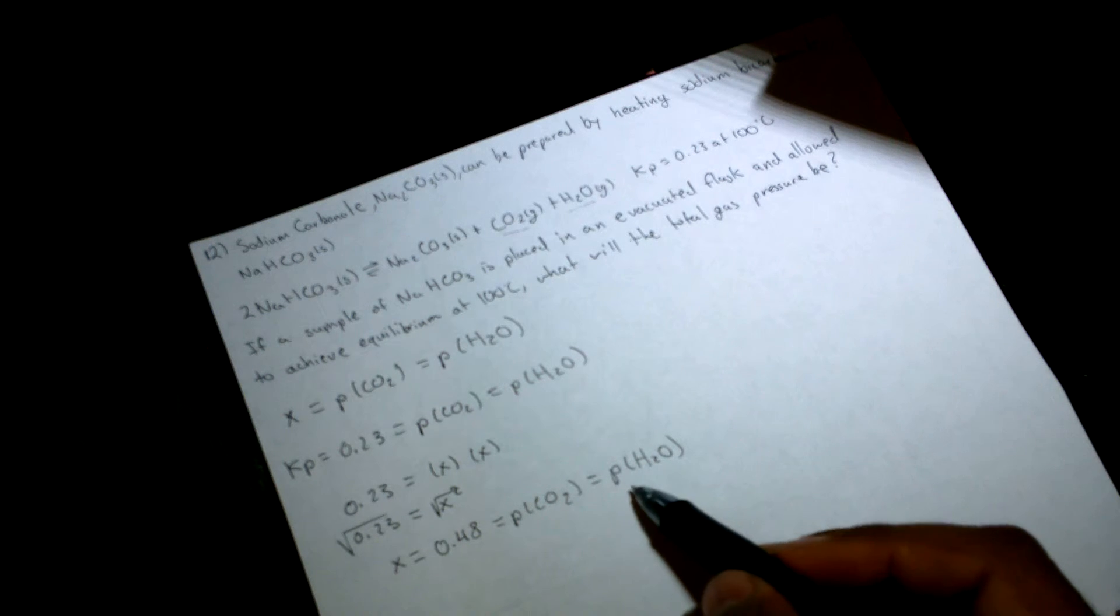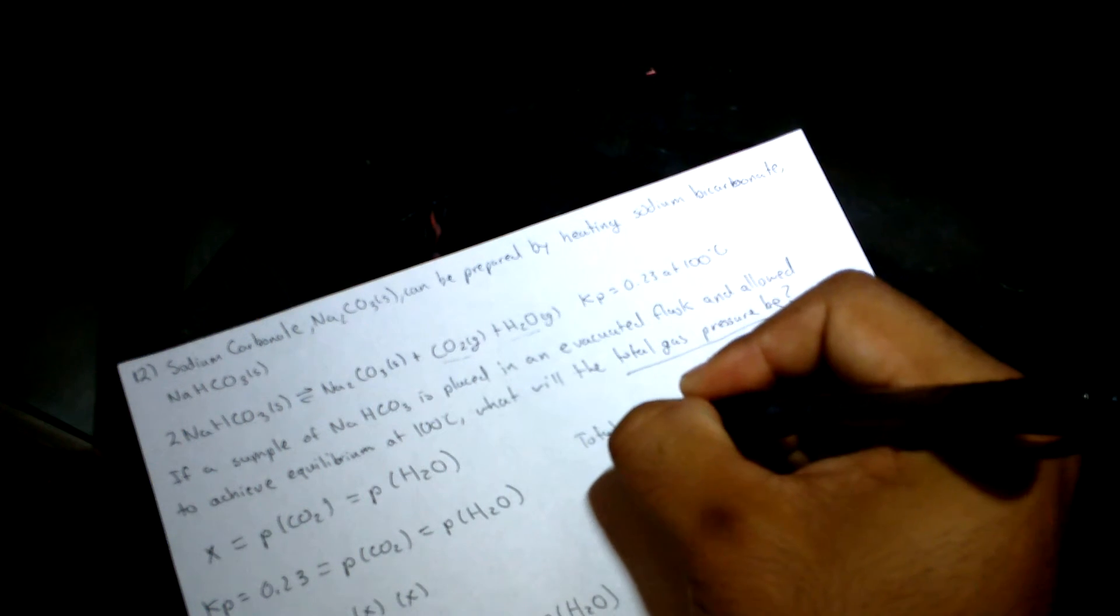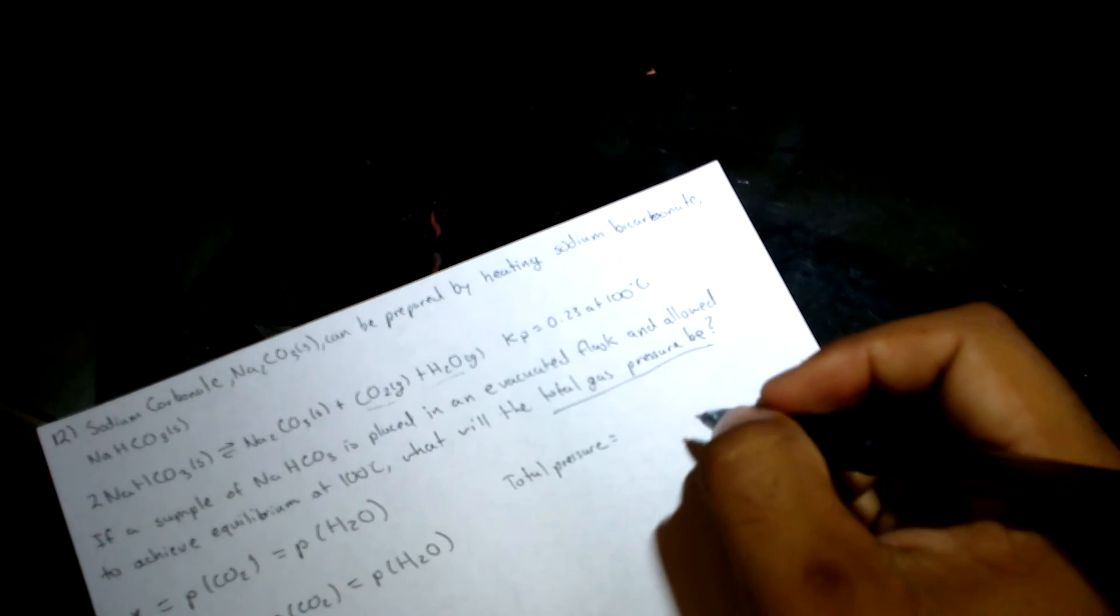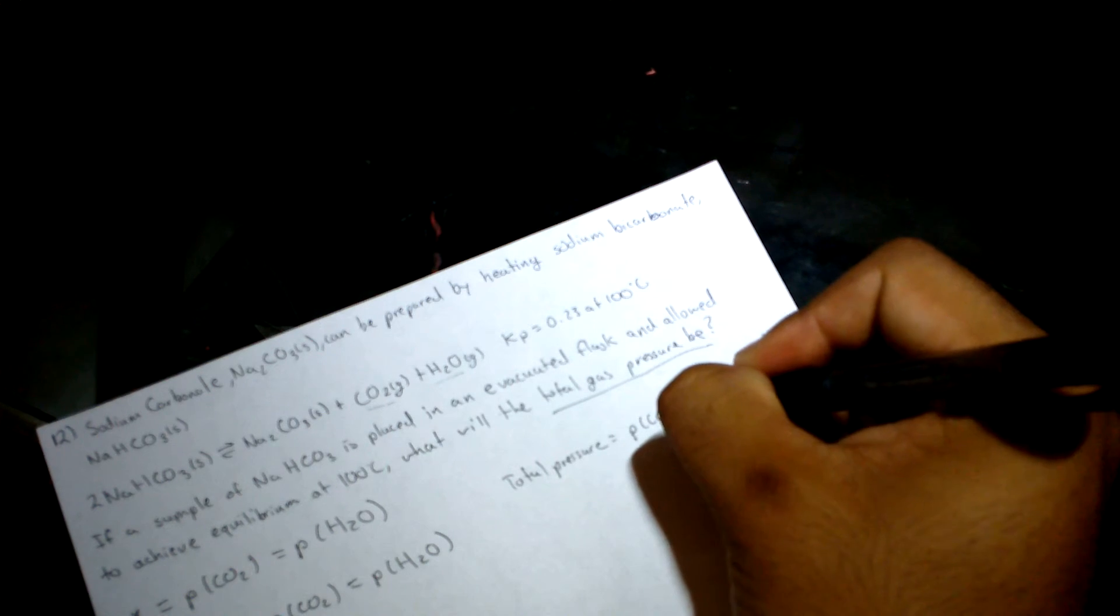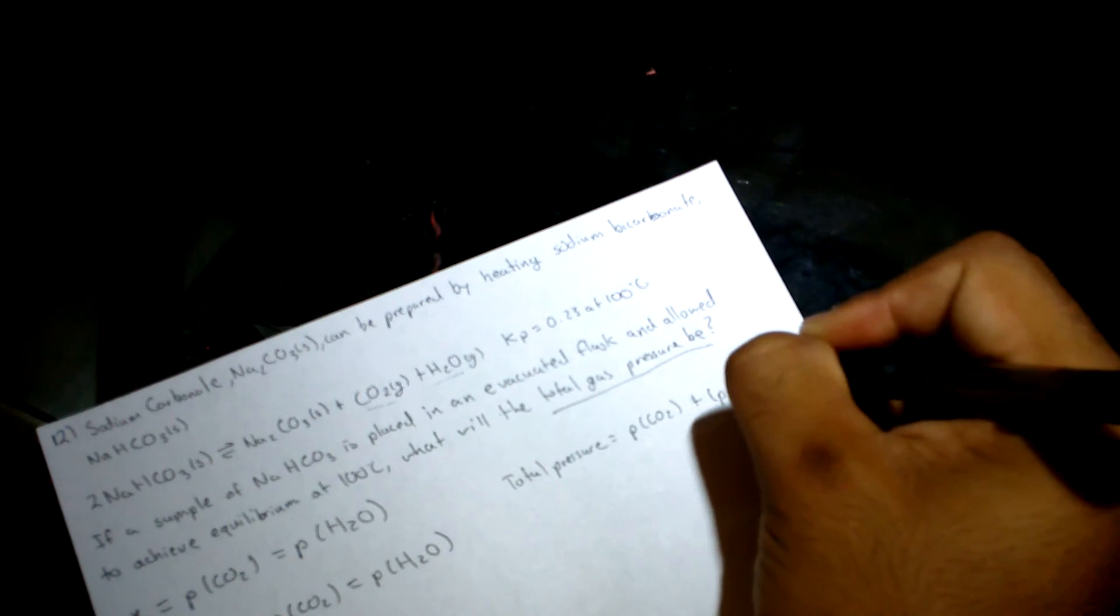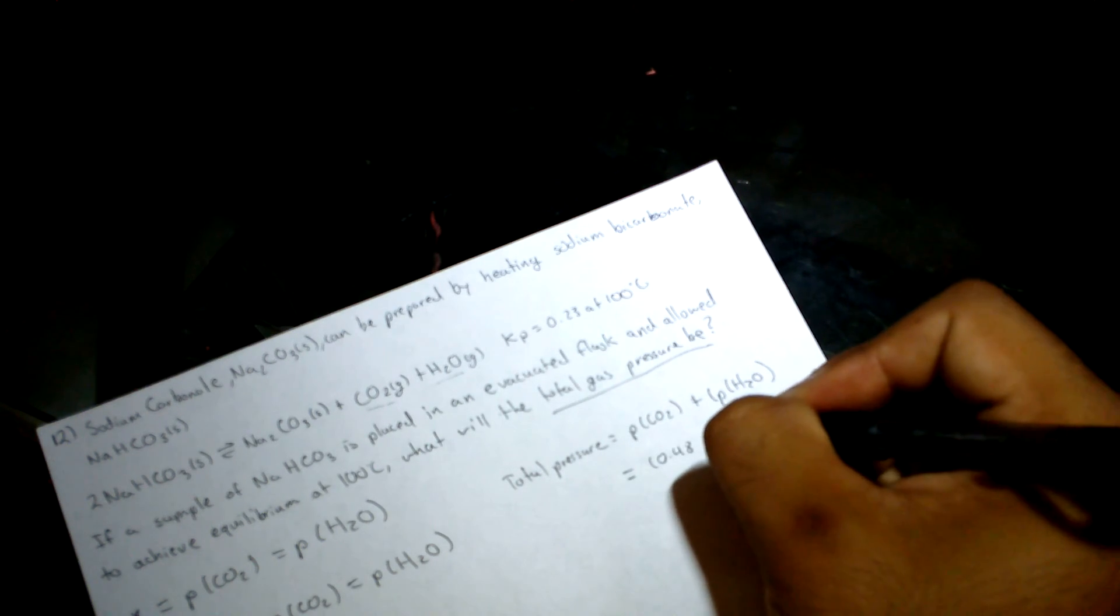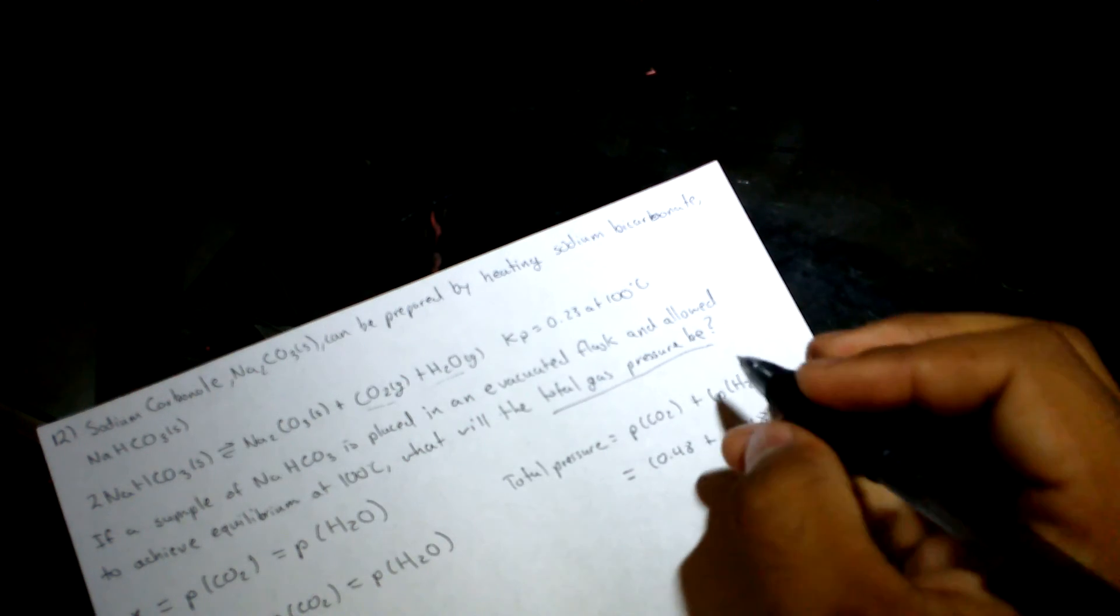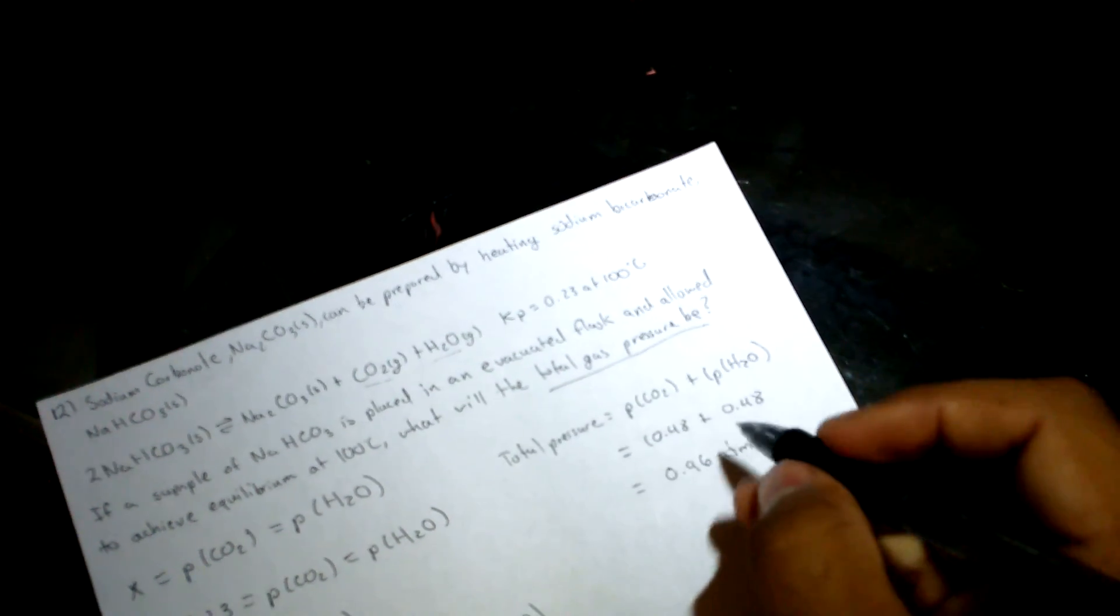The total pressure, which is what we're finding, is the pressure of CO2 plus the pressure of H2O: 0.48 plus 0.48 equals 0.96 ATMs. Simple as that, that is our answer.